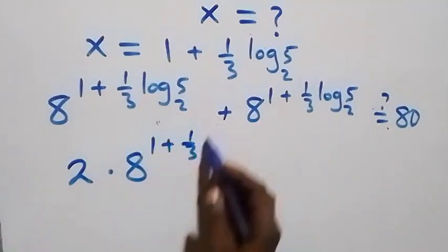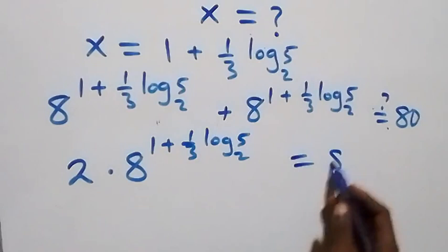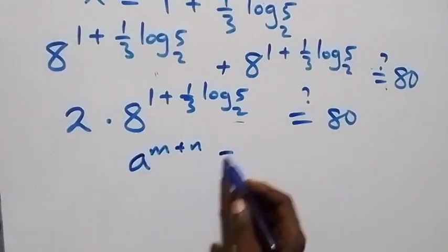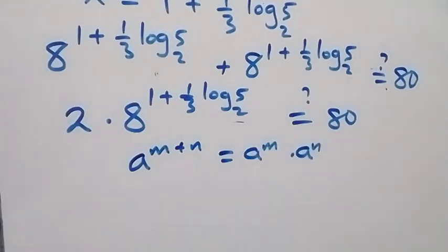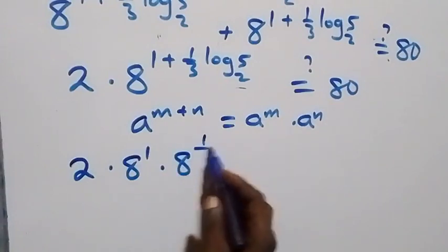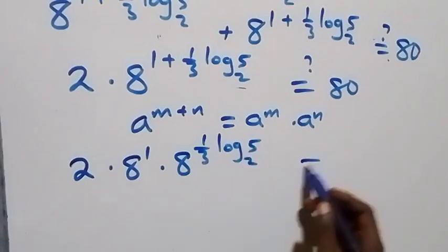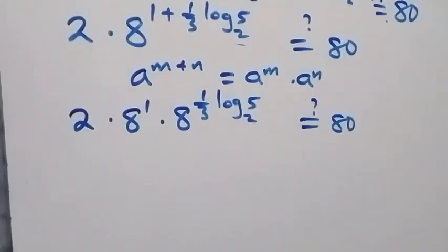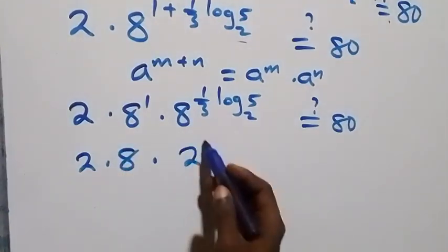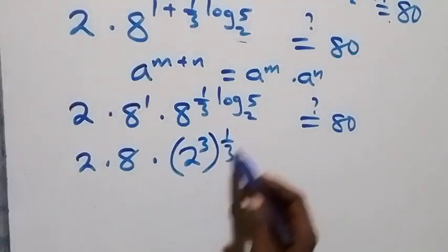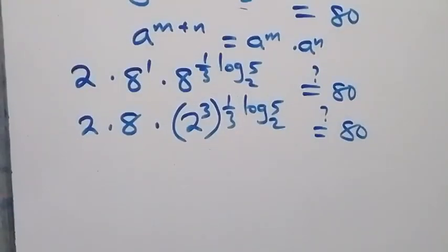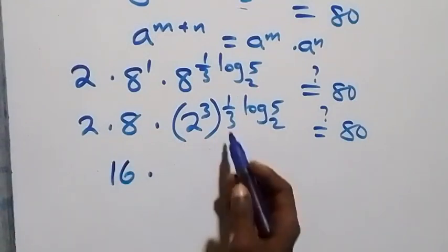By the law of indices, 8 raised to power (n plus m) equals 8 raised to n times 8 raised to m. So we get 2 times 8 raised to power 1 times 8 raised to power (1/3)·log₂5 equals 80. Expressing 8 as 2³, the powers multiply and the 3 and 1/3 cancel, leaving 2 times 8 times 2 raised to power log₂5 equals 80, giving 16 times 2 raised to power log₂5 equals 80.